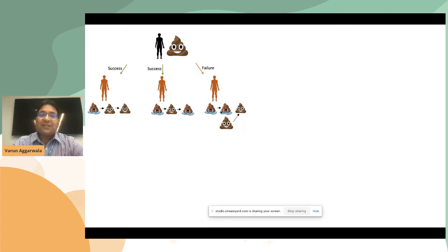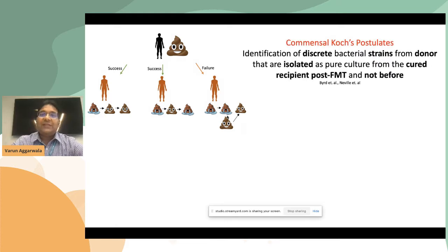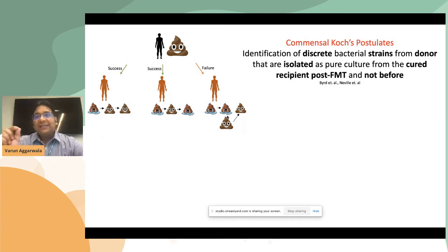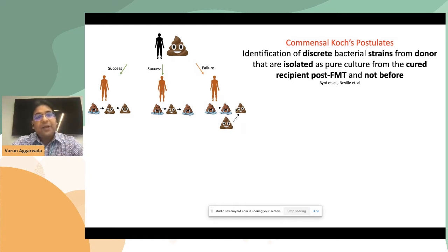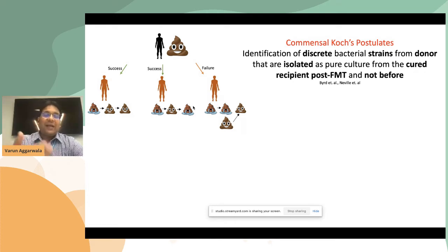The key to answering these questions lies in fulfilling the commensal Koch's postulates: can we identify discrete bacterial strains from the donor, isolated in culture from the cured recipient post-FMT but not before? That is, can we confirm transmission of the donor strain in the recipient and culture them? This could revolutionize and answer many open questions in FMT.